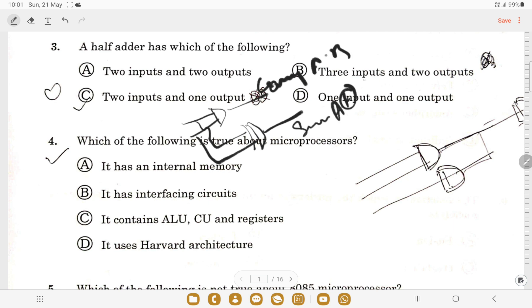Sum will be A XOR B. So we have two inputs A and B and two outputs. From this, the correct answer is option A.